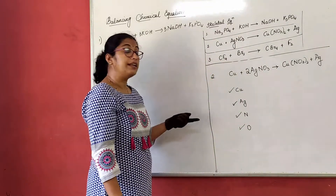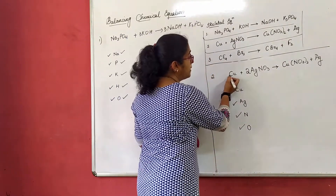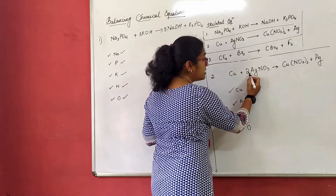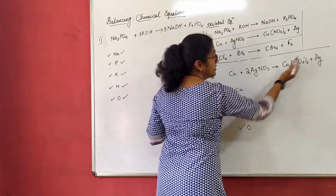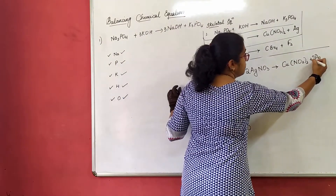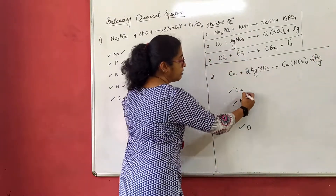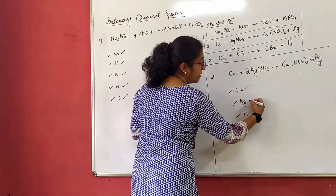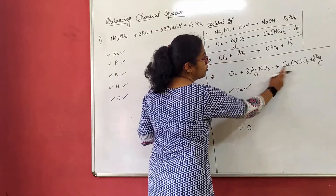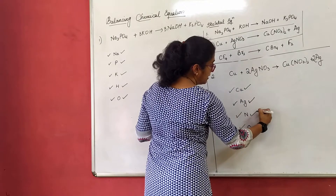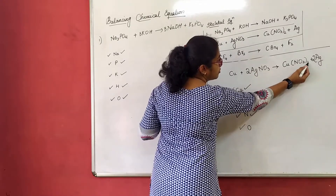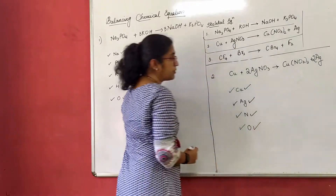Let us cross-verify now. Copper is 1 and copper is 1 — balanced. Silver is now 2 (from coefficient 2 before AgNO₃) and silver on product side is 1 — not balanced. So I put coefficient 2 before silver on the product side. Now silver is balanced. Nitrogen is 2 and nitrogen is 2 — balanced. Oxygen: 2 times 3 equals 6 on reactant side; 2 times 3 equals 6 on product side — balanced.